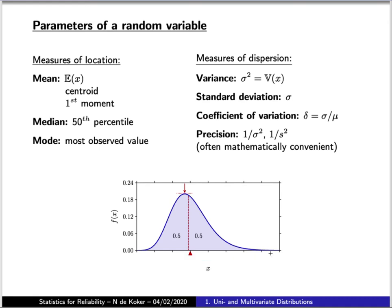The most common measure of dispersion is the standard deviation, whose square is the variance. There are others, such as the coefficient of variation, which describes the standard deviation in a normalized sense relative to the magnitude of the mean. What is often mathematically more convenient is the precision, which is the inverse of the variance.